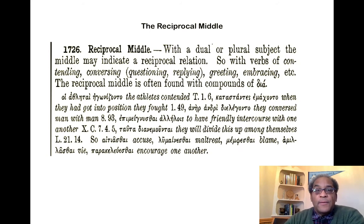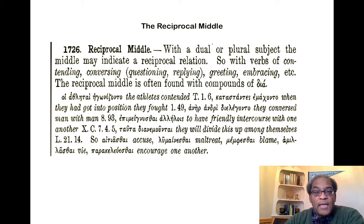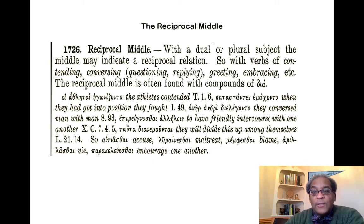At section 1726, Smyth characterizes the reciprocal middle. With a dual or plural subject, the middle may indicate reciprocal relation, with verbs of contending, conversing, questioning, replying, greeting, embracing, etc. The reciprocal middle is often found with compounds of dia. For example: 'hoi athlētai ēgōnizonto' — the athletes contended with one another; 'katastantes emachonto' — when they had got into position they fought with one another; 'anēr andri dielēgonto' — they conversed man with man. That reciprocal middle is also what's going on with 'machesthai' in the opening part of the Iliad.